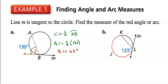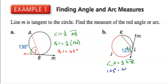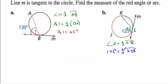The other one says find the measure of the arc. Here's the tangent line, here is the arc. We'll call that angle two. Angle two is equal to one half of the arc of KJL. We know angle two is 125 degrees, so 125 equals one half of arc KJL. Multiply both sides by two, and 250 degrees is equal to the arc of KJL.